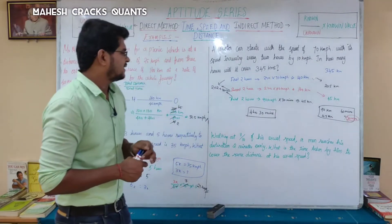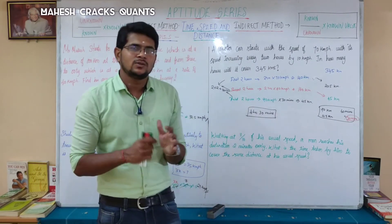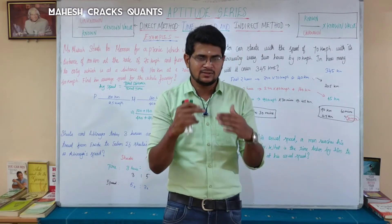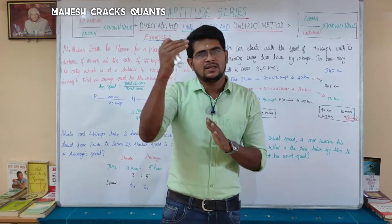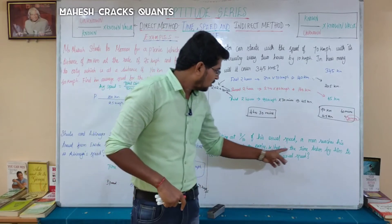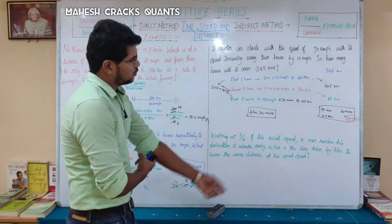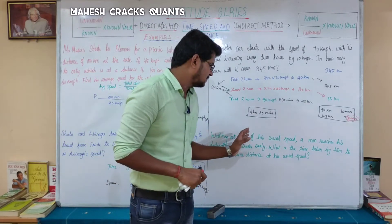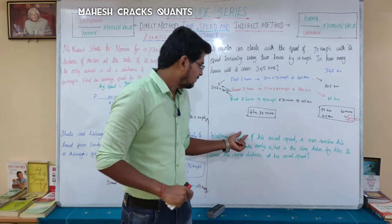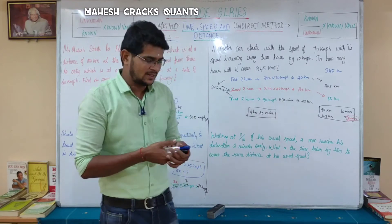Last question. Walking at 11/10th of his usual speed, a man reaches his destination 2 minutes early. The new speed is 11 and the usual speed is 10 — that is the ratio 11 is to 10. What is the time taken to cover the same distance at his usual speed?